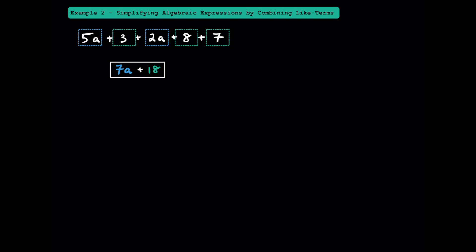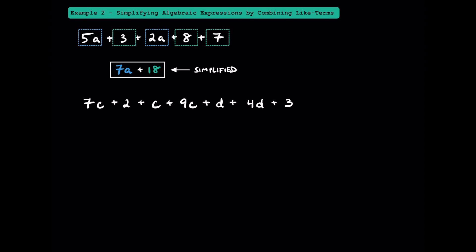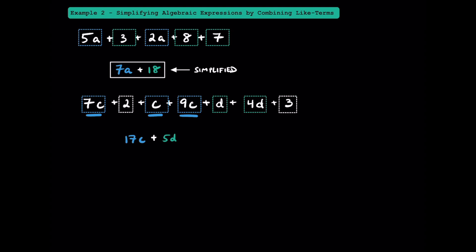By combining like terms, we've simplified this algebraic expression. While mathematically this expression is equivalent to the original, the simplified version looks a little bit less intimidating, is less writing, and will be easier to use when we solve things later. Now let's try simplifying this algebraic expression. Combining 7c and 1c, that's 8c, plus this 9c is going to get us 17c. Combining this 1d and 4d, we can get a total of 5d. And finally, combining these constant terms of 2 and 3, we can get a 5. This would be our simplified expression.